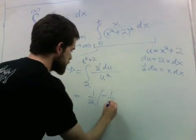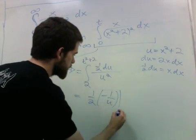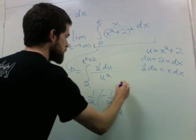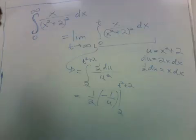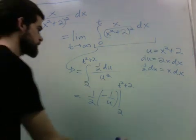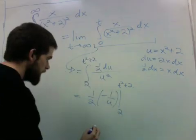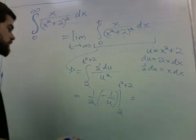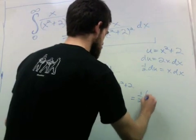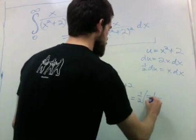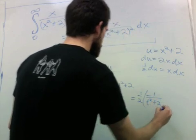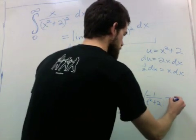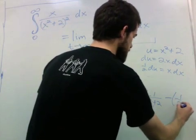When x is t, u is t squared plus 5. So I have one half negative 1 over u squared going from 5 to t squared plus 5. And this is equal to negative 1 over 2 times t squared plus 5 minus negative 1 over 10.